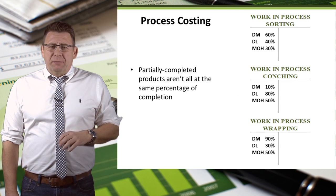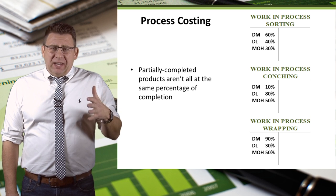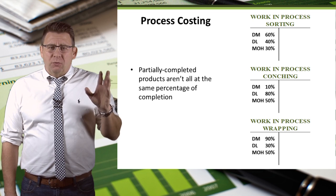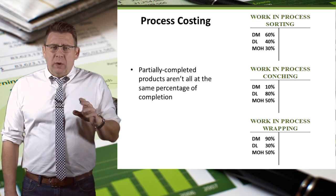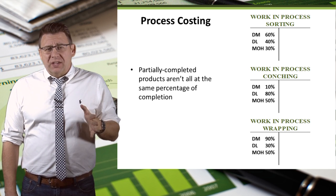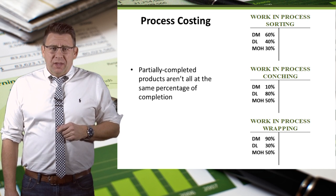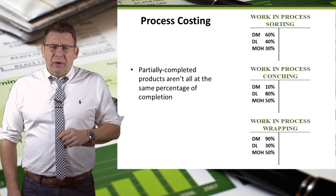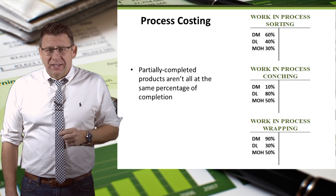Some products may be in the sorting or breaking process, while others are in refining or conching. Some may be in wrapping and packaging. Trying to determine the value of ending WIP inventory can be rather challenging since the products are at different stages in the production process. We know the cost of a fully completed product, but we don't easily know the cost for a 42% completed product.